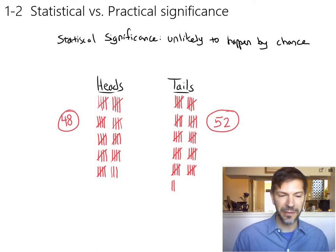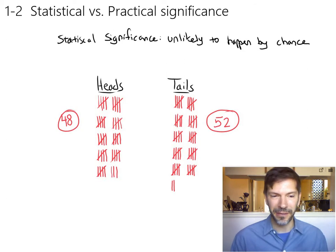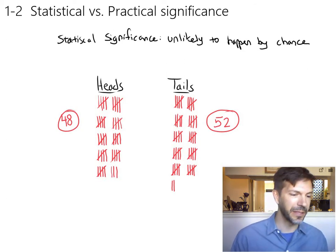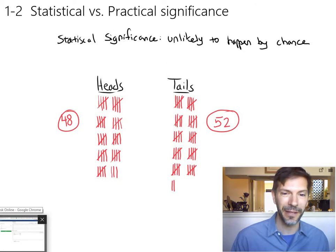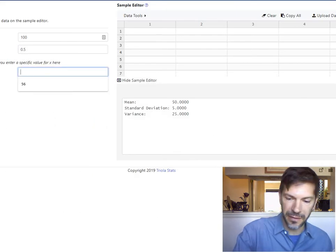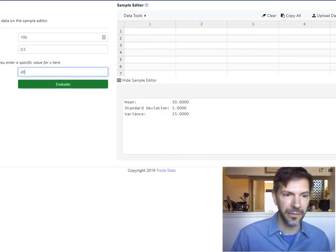Matter of fact, let's figure out - you don't need to know how to do this yet, and you don't know how to do this yet - but let's figure out the probability of getting 48 heads out of 100 flips of a coin. Let's see, let's do 48 here and we'll evaluate that. This is something you'll know how to do later.